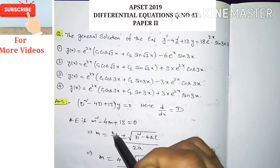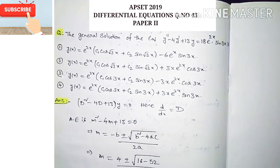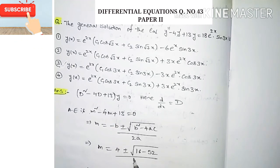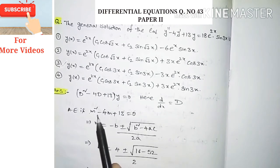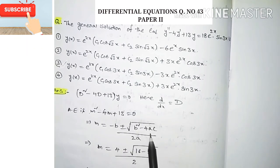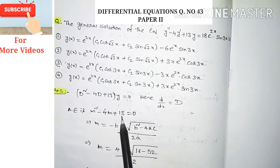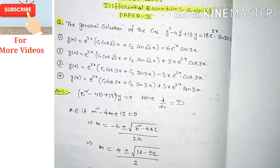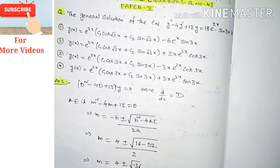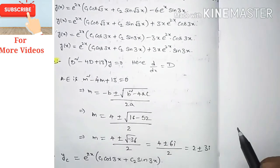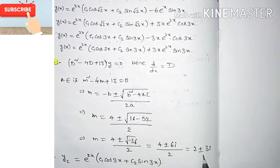We use the quadratic formula m = (-b ± √(b² - 4ac)) / 2a to find the roots. Here b = -4, a = 1, c = 13, so b² - 4ac = 16 - 52 = -36. Therefore m = (4 ± √(-36)) / 2 = (4 ± 6i) / 2 = 2 ± 3i. So the roots are complex conjugates m = 2 ± 3i.